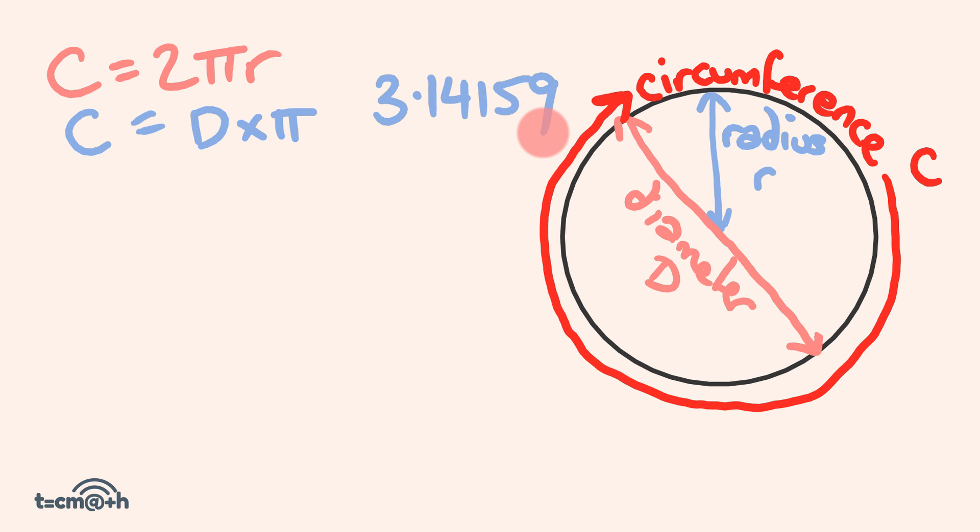So what I'm really saying here is that the circumference of any circle is around about 3.14159 times bigger than the distance across that circle. So if you want to work out how far the distance is around, measure the distance across and multiply it by this 3.14159, this pi. Alright, so let's try this.